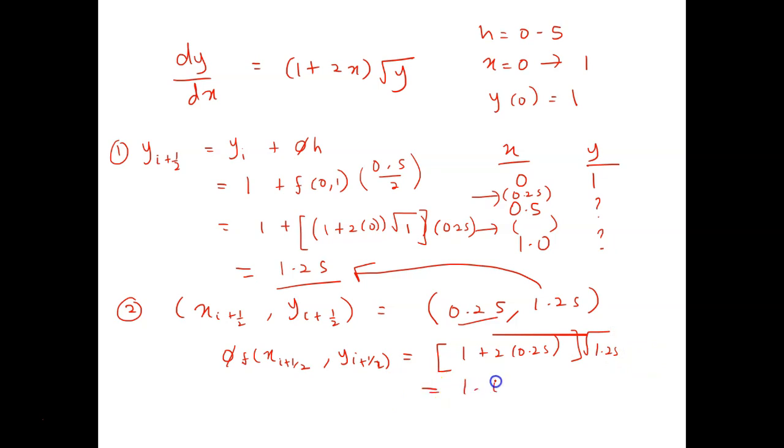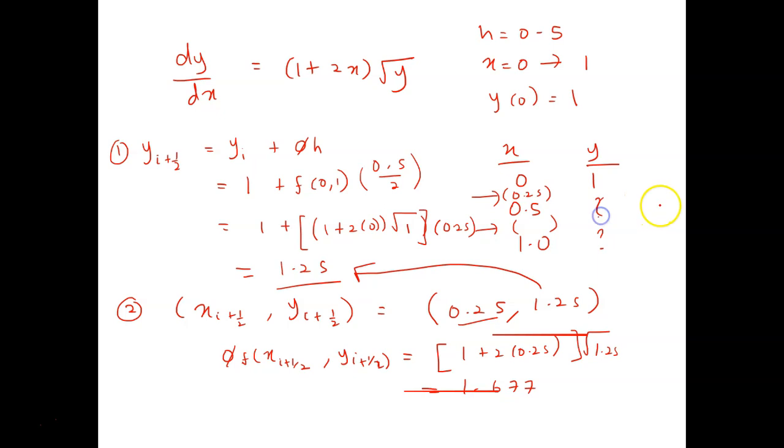And you will get as 1.677. So this one is the formula for the slope which is this formula. So we just substitute 0.25 and 1.25 into this. So here I'm just trying to find the slope for the midpoint because we need this value of slope to calculate the value of y when x equals to 0.5. Alright, so the slope just now is 1.677 and then this is yi plus 1 equals 1 plus 1.677 times 0.5. So this is 1.838525. So finally we got the value for this which is 1.83 and so on.